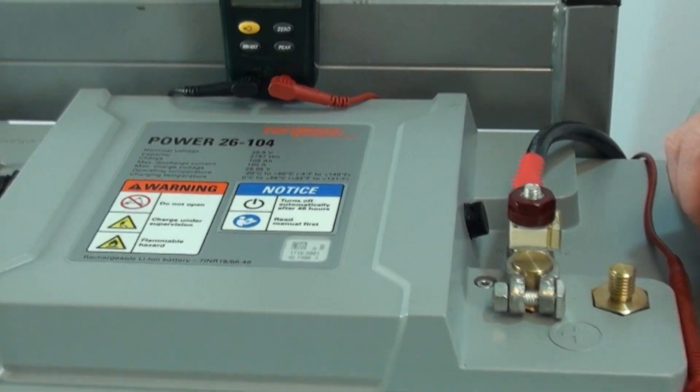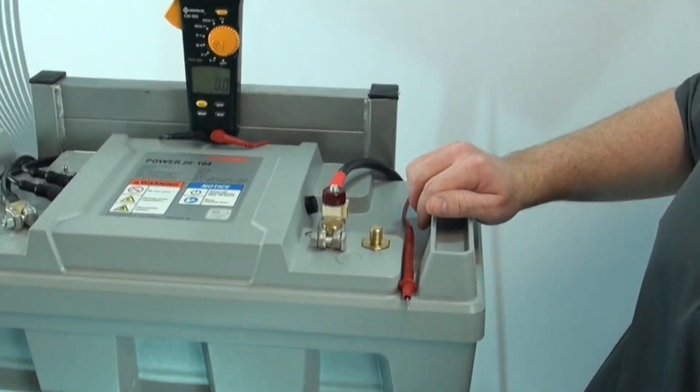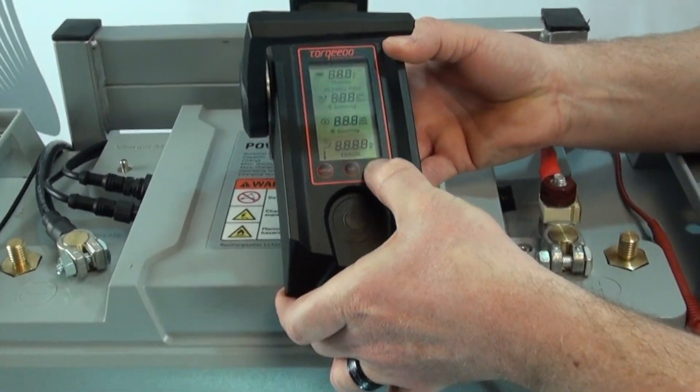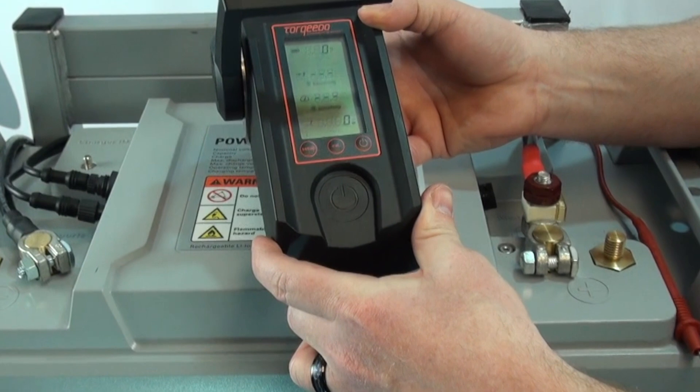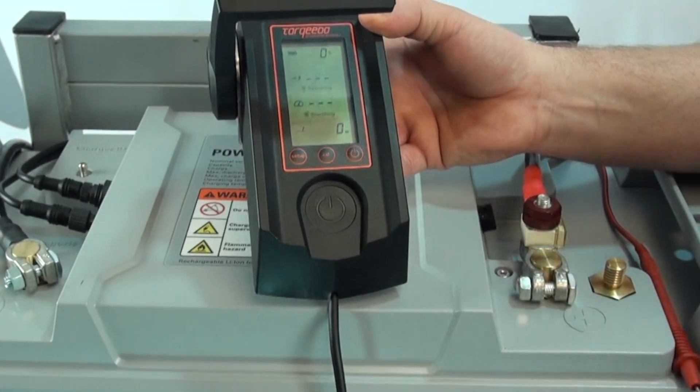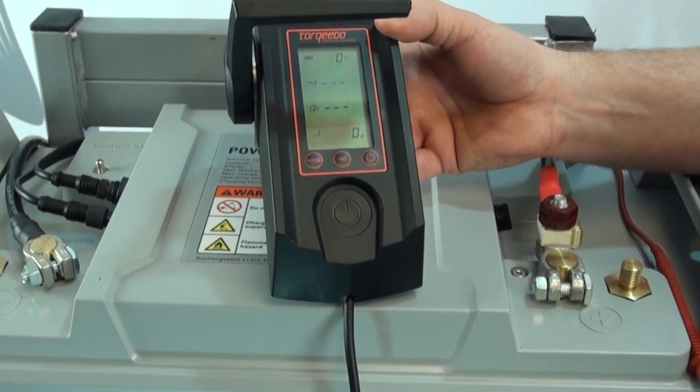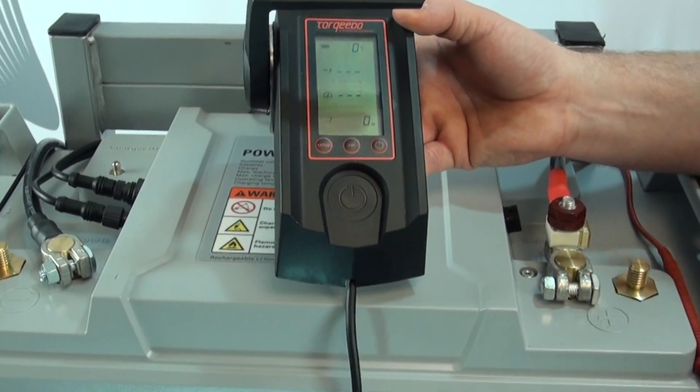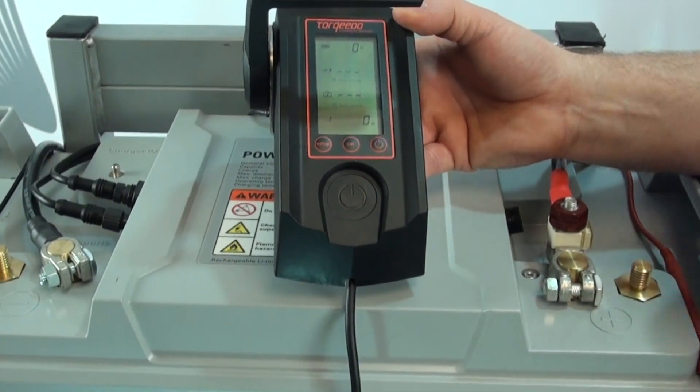So now we're going to grab the Cruise remote throttle, which I have here. I'm going to turn it on. And at the moment, this battery is at 0%. Normally for storage, you want to have it between 20 to 40% and then deactivated.